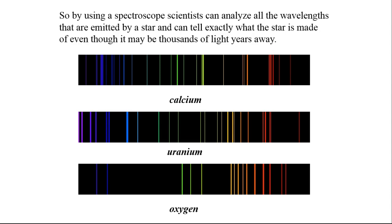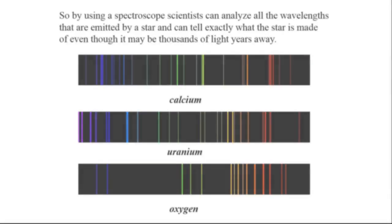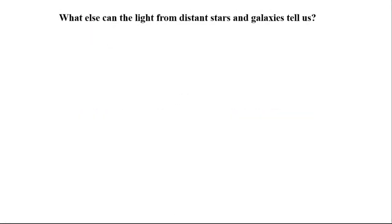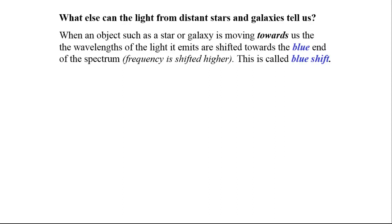These are the spectrums of calcium, uranium, and oxygen. What else can the light from distant stars and galaxies tell us? When an object such as a star or galaxy is moving toward us, the wavelengths of the light it emits are shifted toward the blue end of the spectrum.